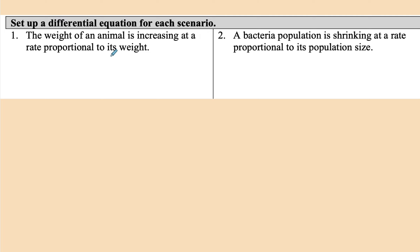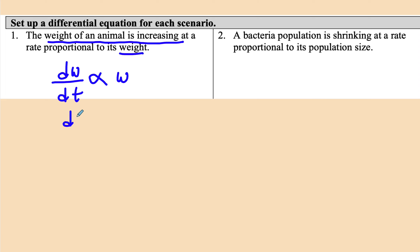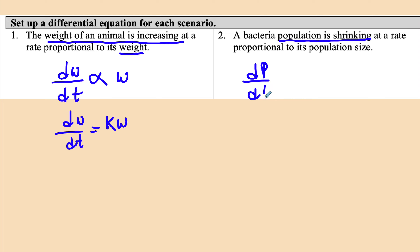Let's set up some differential equations. First: the weight of an animal is increasing — that's a rate of change — so dw/dt with respect to time is proportional to the weight. We introduce the constant of proportionality to get dw/dt = kw. Second: the population is shrinking — decreasing — so dp/dt is proportional to the population size p, giving dp/dt = kp.